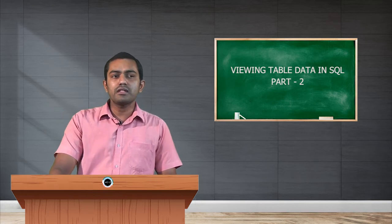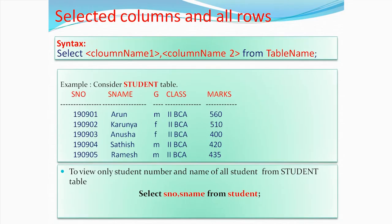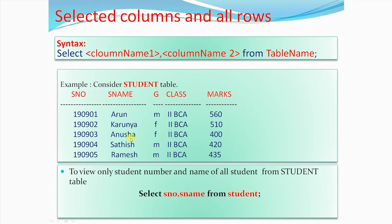We are going to use the student table again, which has columns: student number, student name, gender, class, and marks, with five records. For example, to view student number and name of all students from the student table — if we use SELECT star FROM student, all rows and all columns are displayed. But here I want to concentrate only on student number and student name. The query would be: SELECT student_number, student_name FROM student. Executing this query gives output with only two columns displayed.